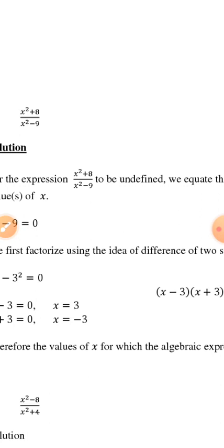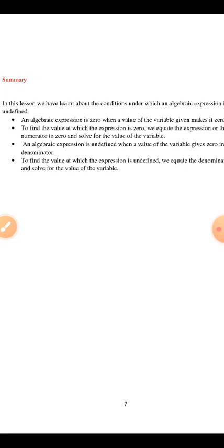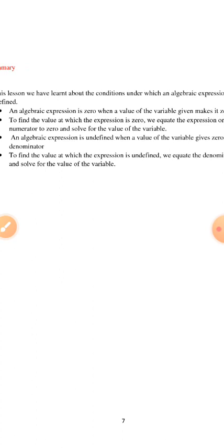Another example: x raised to the power 2 plus 8, all over x raised to the power 2 minus 9. Try your hands on it. In summary, in this lesson we have learned about the conditions under which an algebraic expression is zero or undefined. An algebraic expression is zero when a value of the variable gives zero in the numerator; it is undefined when the denominator is zero.